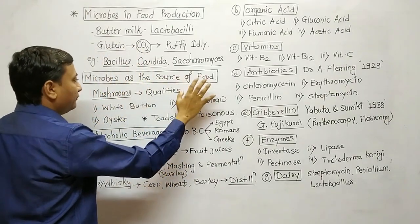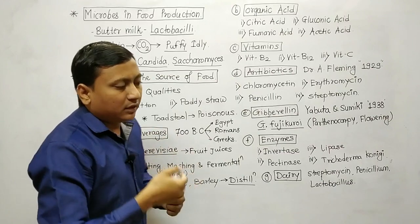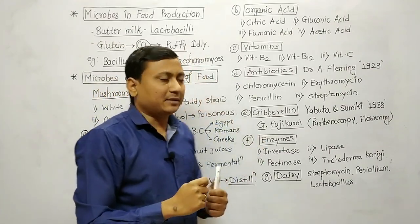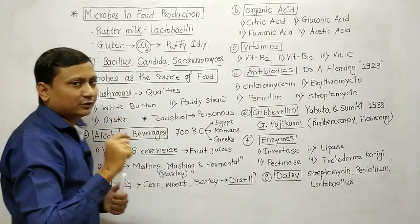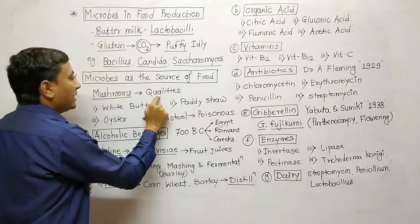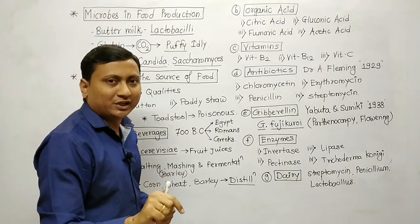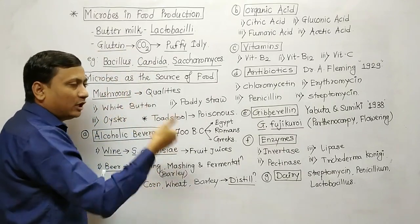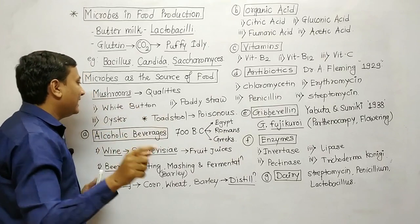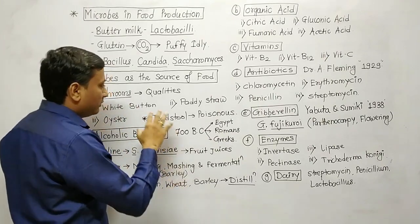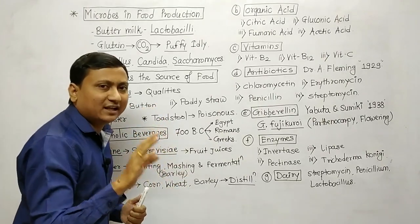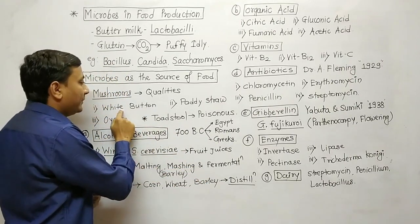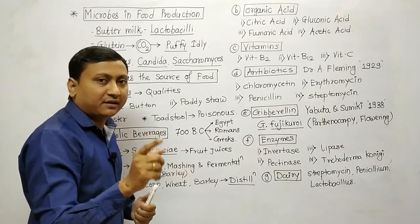The next topic is microbes as a source of food. We consume a lot of microorganisms. The best examples are mushroom and truffle. The qualities of mushroom are mentioned in the textbook. There will be common names and biological names in a chart. In the textbook, you should prepare both the common names as well as biological names. It is very important.